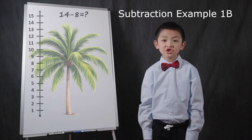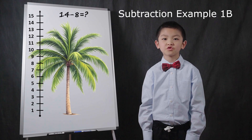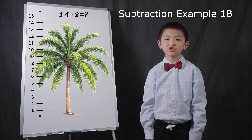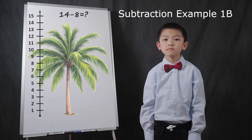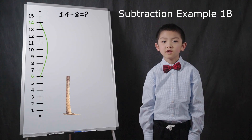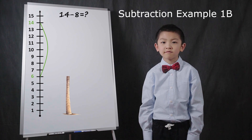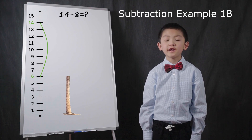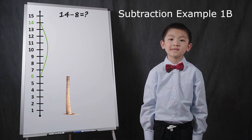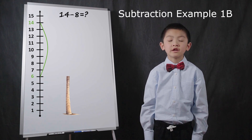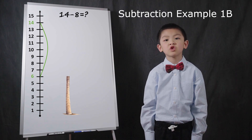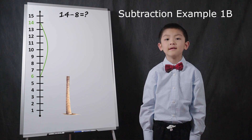Now imagine there is a tree that is 14 meters tall. You chop off the top 8 meters, then you count what is left. The tree has 6 meters of trunk remaining.